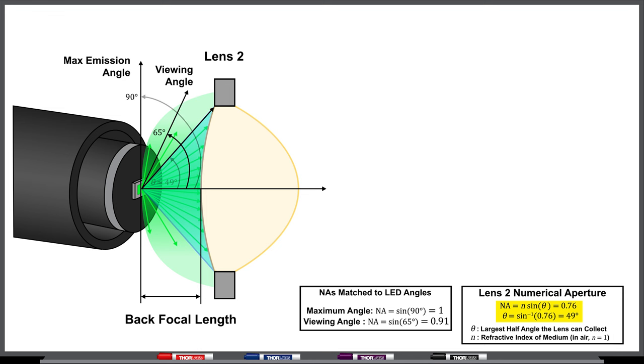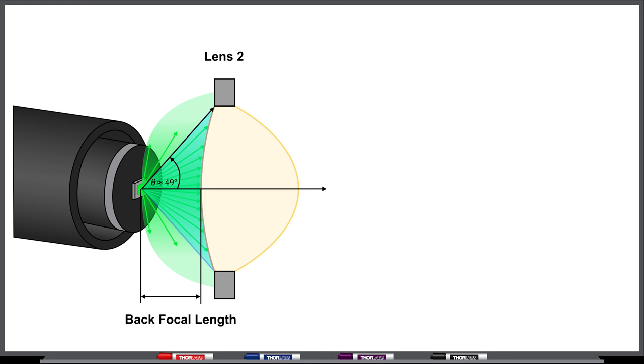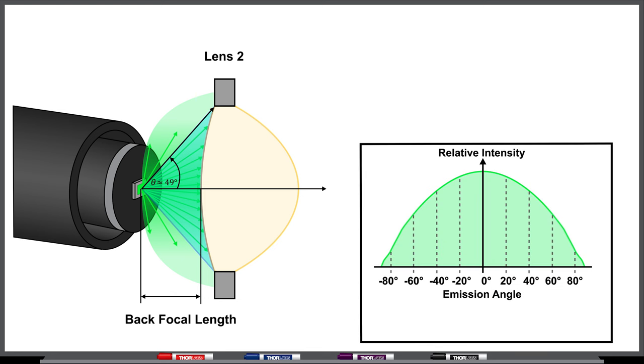Often it can even be difficult to find a lens with an NA large enough to collect all of the light across the LED's full viewing angle. To estimate the amount of light collected by a particular lens, start with the intensity versus emission angle provided with the LED and sum over the area of the beam captured by the lens based on the NA.